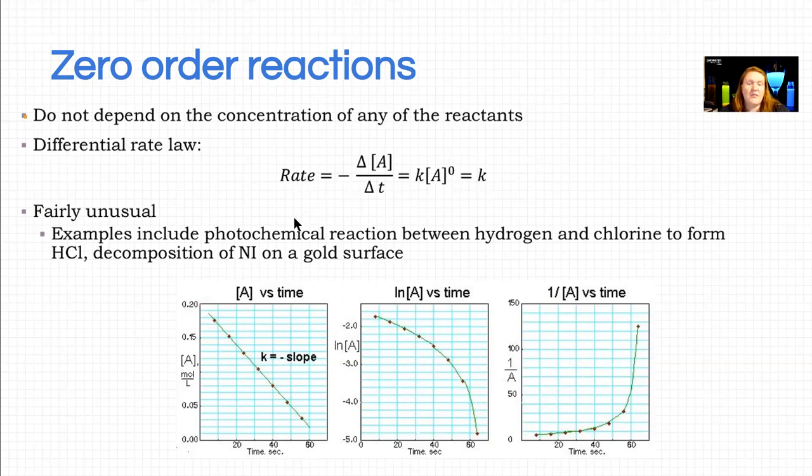When you graph, so examples here include photochemical reactions. That means reactions that are stimulated by light. There's lots of these in our everyday life, but one common one is hydrogen peroxide decay. That's why it's in a brown, dark brown bottle. Another one, this is not everyday life. I hope it's toxic, but is hydrogen and chlorine will form HCl. And you can also put nickel on a gold surface. So these are all zero order reactions.